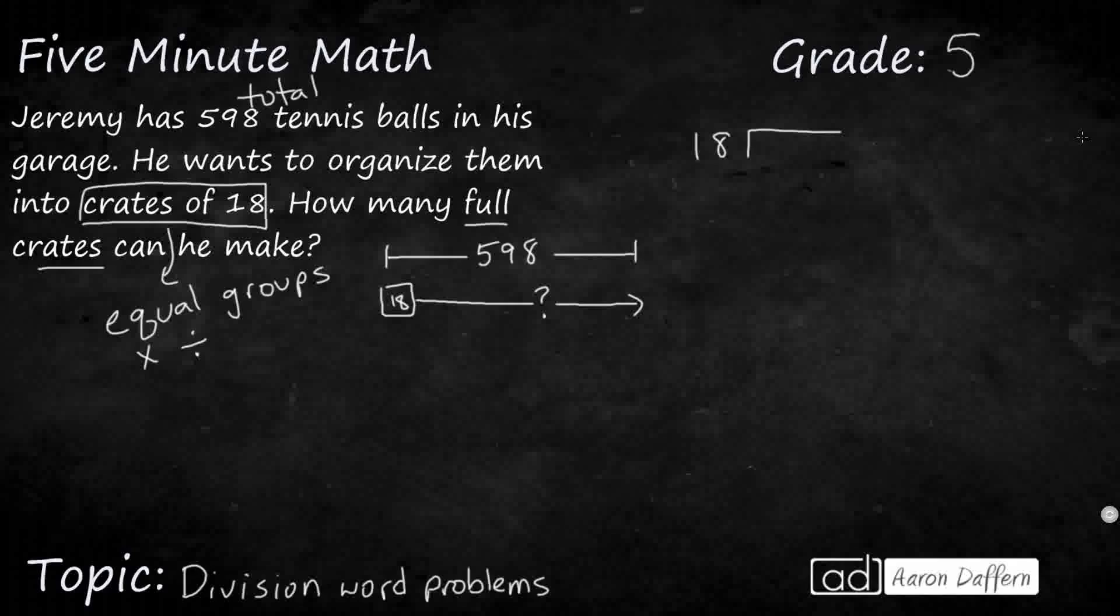How many 18s can go into 598? So when our divisor, which is 18, is 2 digits, we're going to end up doing it just like we would 1 digit. We're going to do our, does McDonald's sell cheeseburgers - that's my divide, multiply, subtract, check, and then bring down. But the difference here is that we are going to have a 2 digit divisor. So we might need a little bit of estimation.